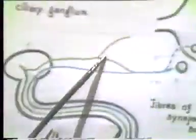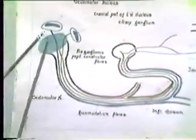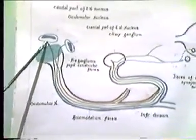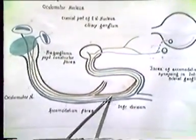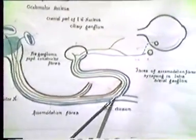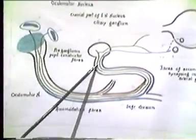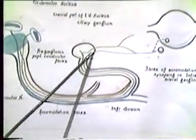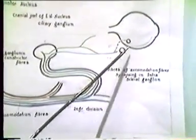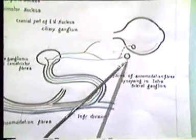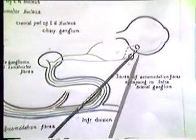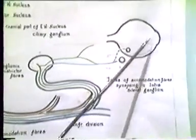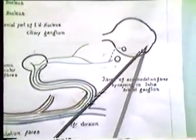Postganglionic fibers go to the sphincter pupillae muscle in the iris. The accommodation fiber from the posterior part of the Edinger-Westfall nucleus runs similarly through the lower division of the oculomotor and through the nerve to inferior oblique via the motor root. However, most accommodation fibers do not synapse in the ciliary ganglion; they synapse in episcleral and intrascleral ganglia known as Axenfeld ganglia. Postganglionic fibers then travel through the choroid and reach the ciliary muscles, bringing about accommodation.